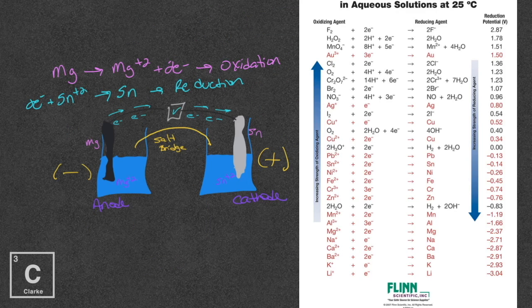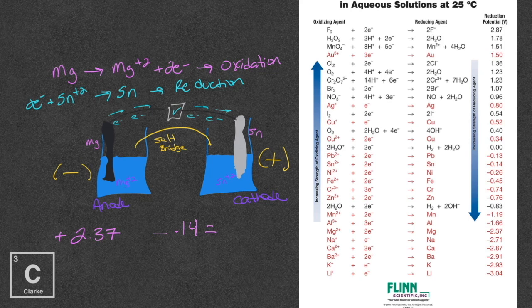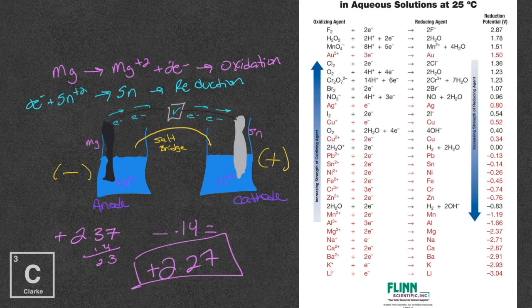Okay, so remember, we're going to use our standard reduction potential chart. It's showing us just the reductions. Let's find magnesium. Now magnesium is the oxidation, so we need the opposite of magnesium whenever we find it. Here's magnesium here. We've got a negative 2.37. So that means we have a 2.37 positive because we were solving for oxidation, but we were using a reduction chart. Now let's look at the reduction of tin. We're just going to use this number as is. Here's tin, and it is a negative 0.14. So then we would add these numbers together, and I'm getting positive 2.27. This is a spontaneous cell.